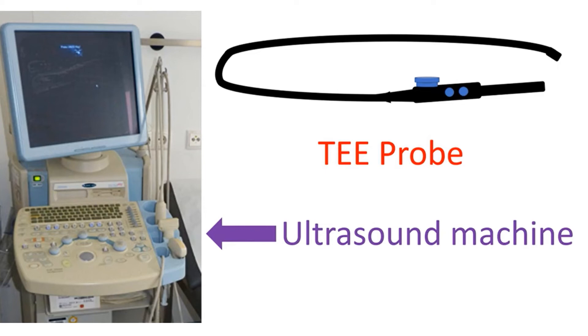A reasonable distance from all these vital structures is needed to place the device without immediate and long-term complications. While loading the folded device into the delivery system, special care is taken to avoid introduction of air bubbles. This is done by loading the device under water in a tray. The delivery system is flushed well before introduction into the blood vessel to remove any air bubbles, as air entering blood vessels can go and block a blood vessel in the brain, heart, or other vital organs.